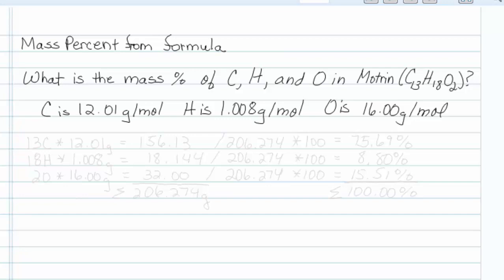What is the mass percent of carbon, hydrogen, and oxygen in Motrin, which has chemical formula C13H18O2?